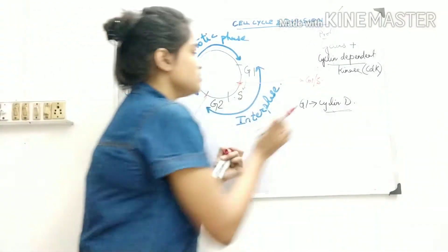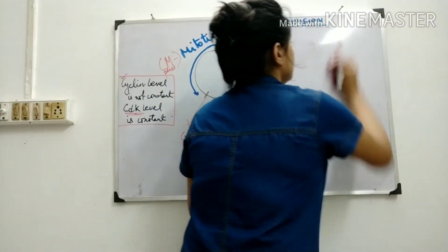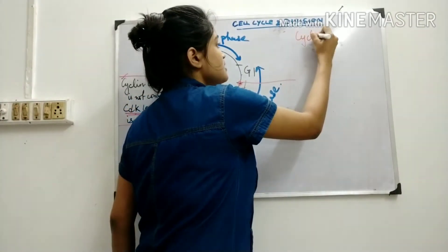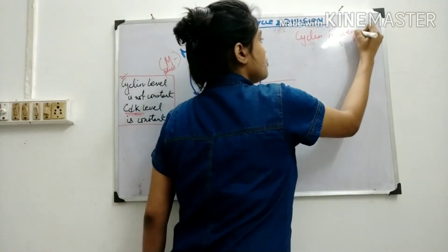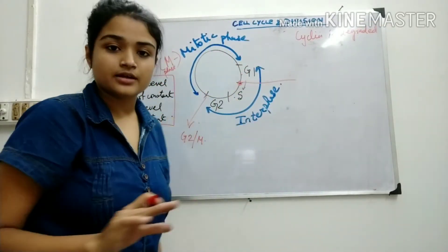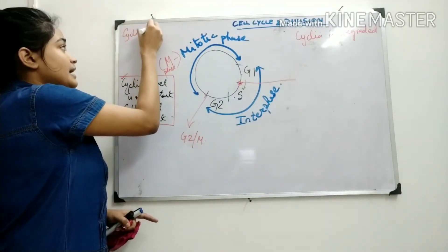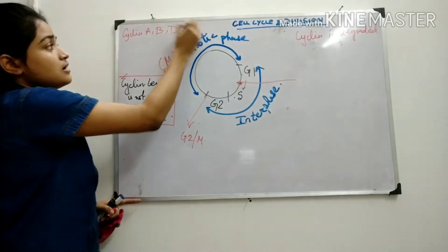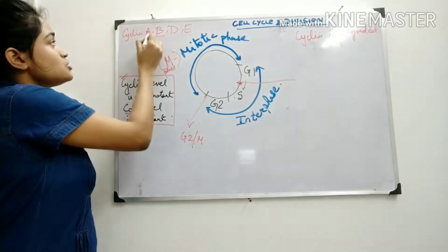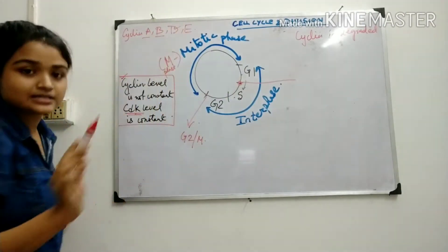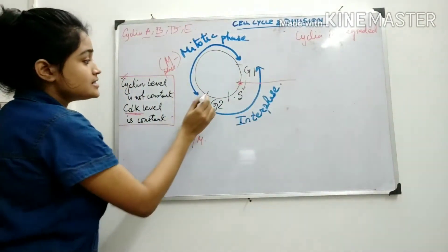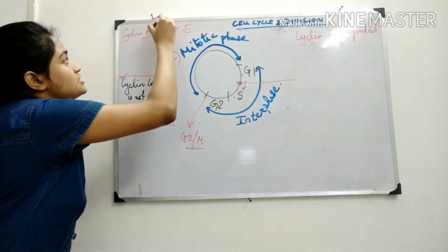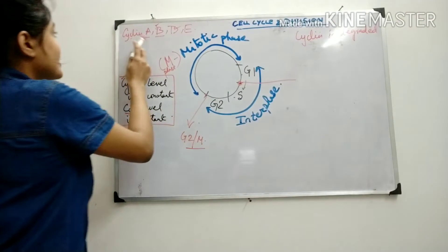Cyclin is degraded when it is not required in a particular stage. We have cyclin A, cyclin B, cyclin D, and cyclin E — various cyclins acting in different phases. In G1, cyclin D is active. In S phase, cyclin E and A are active. In the G2/M checkpoint and mitotic phase, cyclin B is active. So different cyclins are responsible for different stages and are degraded in certain stages.